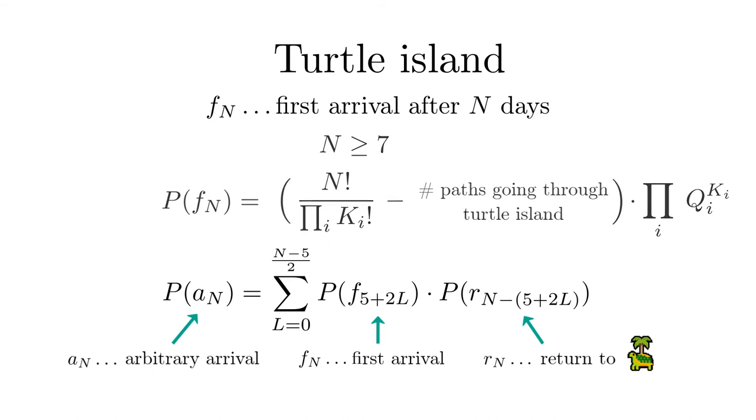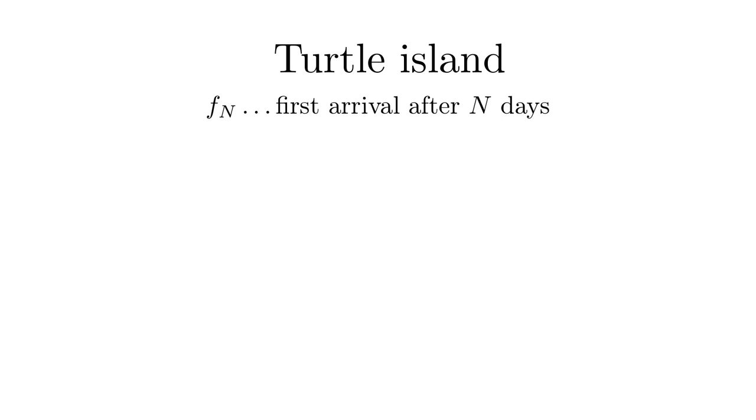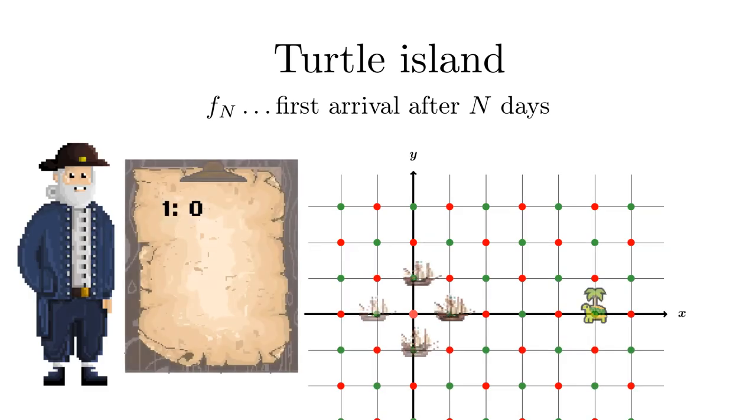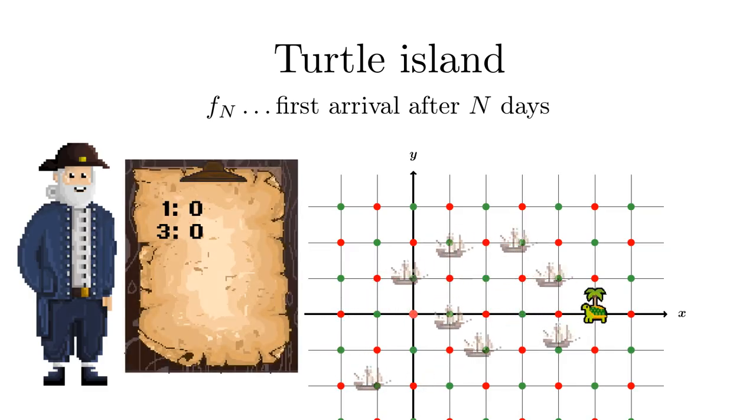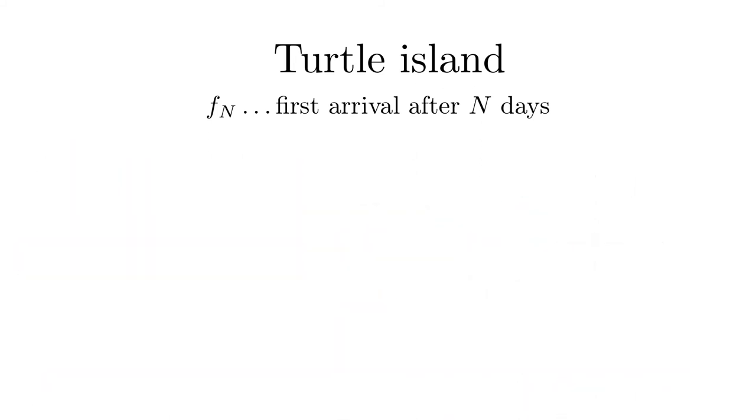Besides the analytical version there are also other ways to solve this problem. One by using a computer simulation using many walkers to count the relative frequency of arrivals and one based on Markov processes or Markov matrices and working with probability distributions which we will discuss just now. Have a look at the Pluto notebooks that show you these different solutions and other simulation techniques.